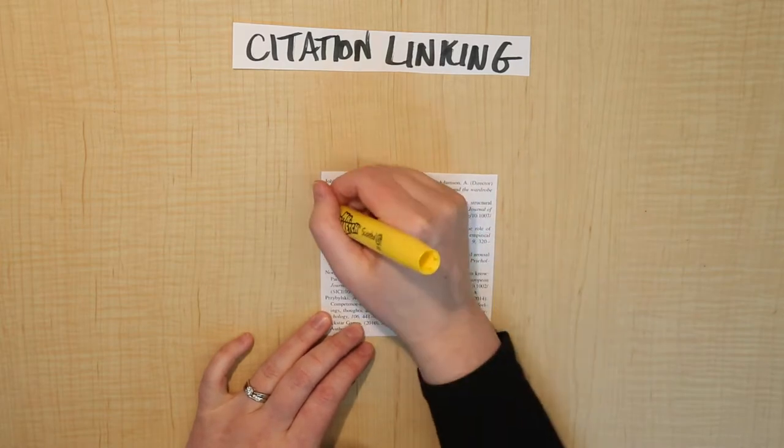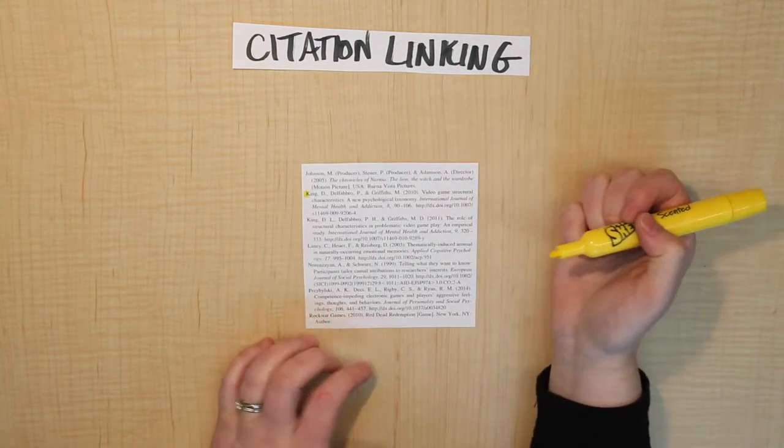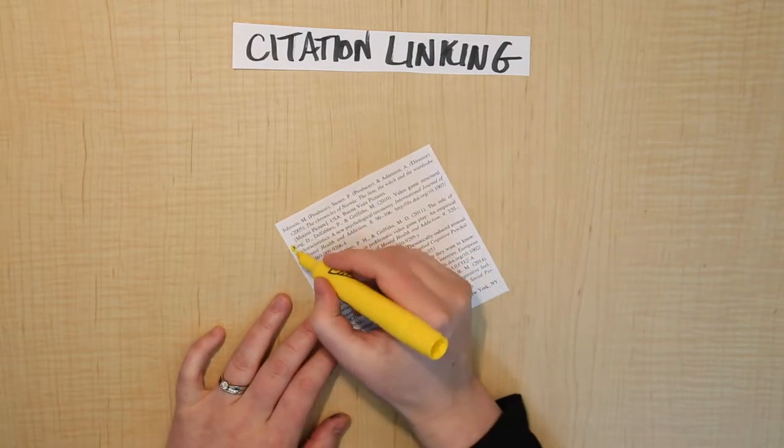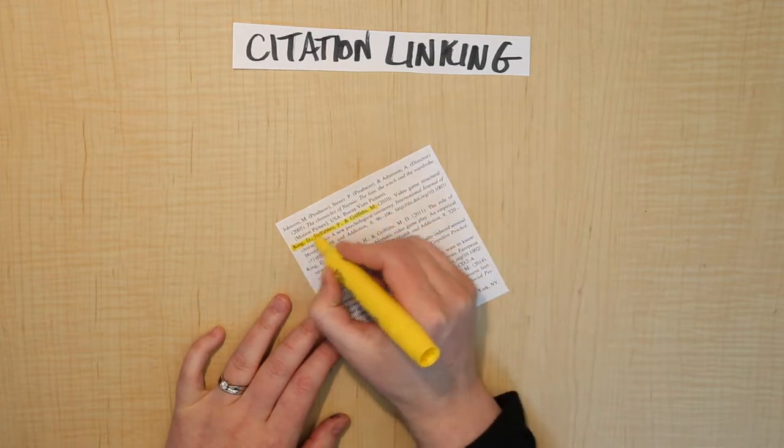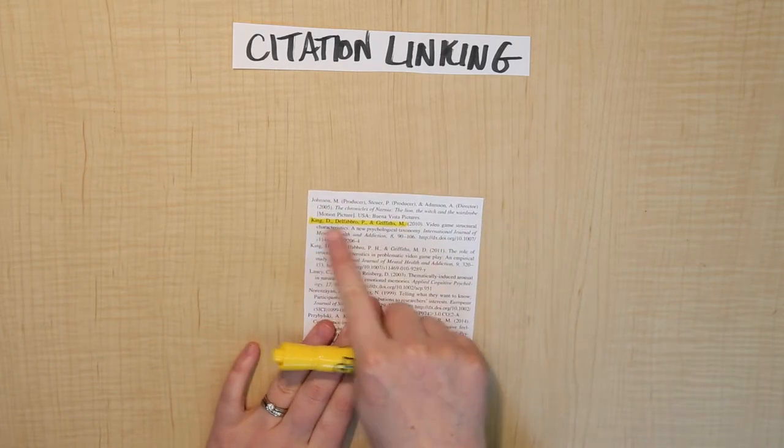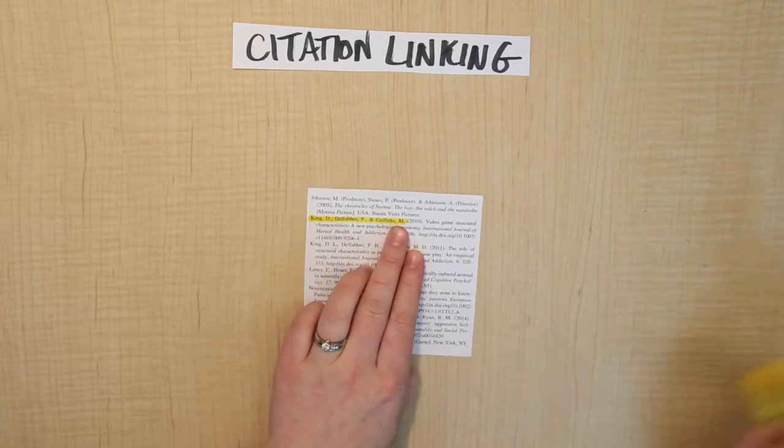Let's look at this one here that starts with King. Whenever you look at a reference list, you're always going to see a few things. They're always going to start with, or almost always going to start with, the authors of the article that they were citing. So in this case, we've got three of them, and their last names are King, Del Fabro, and Griffiths. So that's the author information.